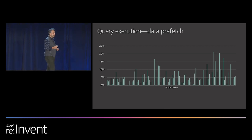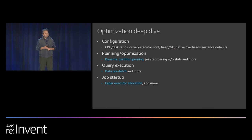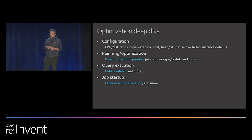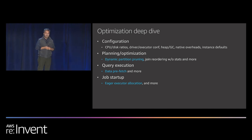There are other things we have done, like data prefetch, which allows us to prefetch data to better utilize the CPU. If you look at all the performance optimizations, they fall into these categories: configuration, driver-executor conf ratios, heap memory ratios and overheads, instance details; planning and optimization such as dynamic partition pruning; query execution such as data prefetch; and improvements in job startup time like eager executor allocation.